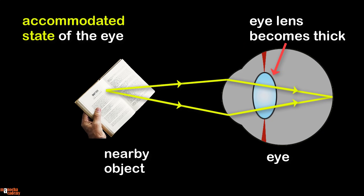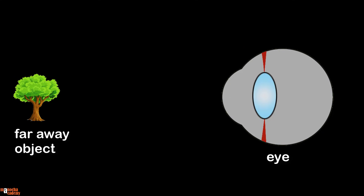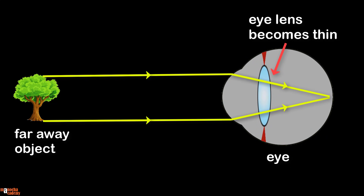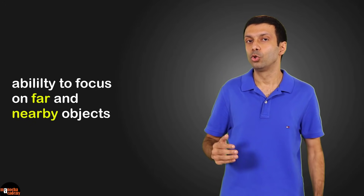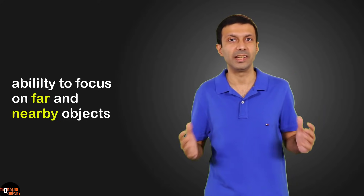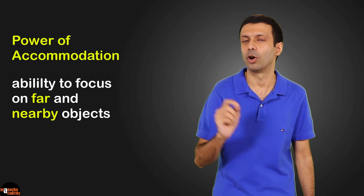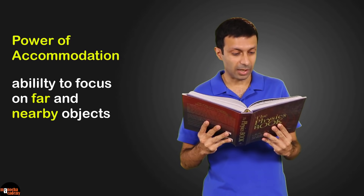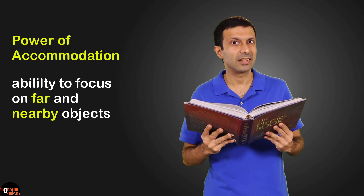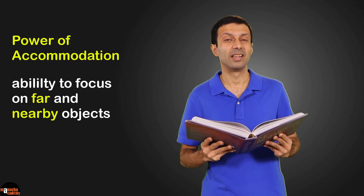This is called the accommodated state of the eye. When the object is far away at infinity, the ciliary muscles are in a relaxed position — the relaxed ciliary muscles pull the suspensory ligaments tightly, the eye lens gets stretched and becomes thin, focal length increases, and the image is focused on the retina. This is the unaccommodated state, the relaxed state of the eye. This autofocus ability to focus distant and nearby objects on the retina by changing the focal length is called the power of accommodation. You can try this yourself — hold a book, look far off, then suddenly look at the book, and notice that the eye takes some time to adjust.